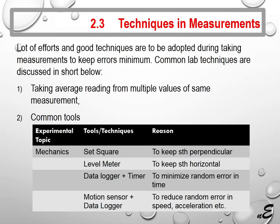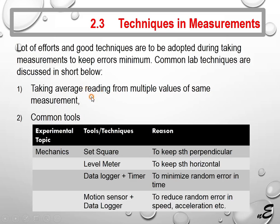Techniques in measurements: a lot of effort and good techniques are to be adopted during taking measurements to keep errors minimum. Technique 1 is taking an average reading from multiple values of the same measurement. We will always try to take several measurements for a single reading. By taking the mean or average of several readings, we can avoid random errors. Random errors can be removed by taking averages from multiple readings.